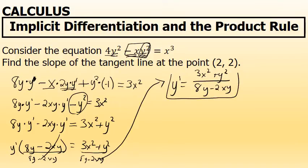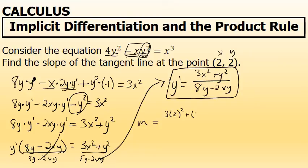This is the derivative, and I'm going to use it to answer the question, which is to find the slope of the tangent line at the point (2, 2). I'm going to substitute x equals 2 and y equals 2 into the derivative, giving the slope as 3 times 2 squared plus 2 squared, all over 8 times 2 minus 2 times 2 times 2.